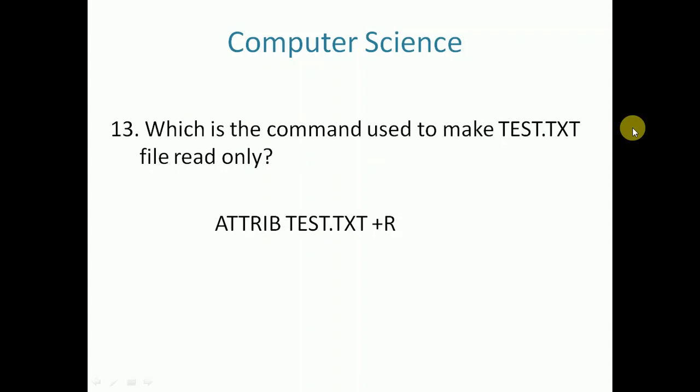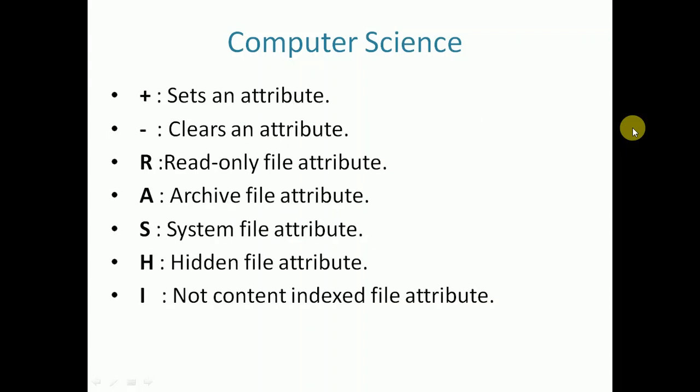Which is the command used to make test.txt file read only? The answer is ATTRIB test.txt +R. The attributes used with the ATTRIB command: plus is used to set an attribute, minus is used to clear an attribute, R is used to set the file in read-only mode, A is used to set the file in archive mode, S is used to set the file in system file mode, H is used to set the file in hidden mode, I not content indexed file attribute.